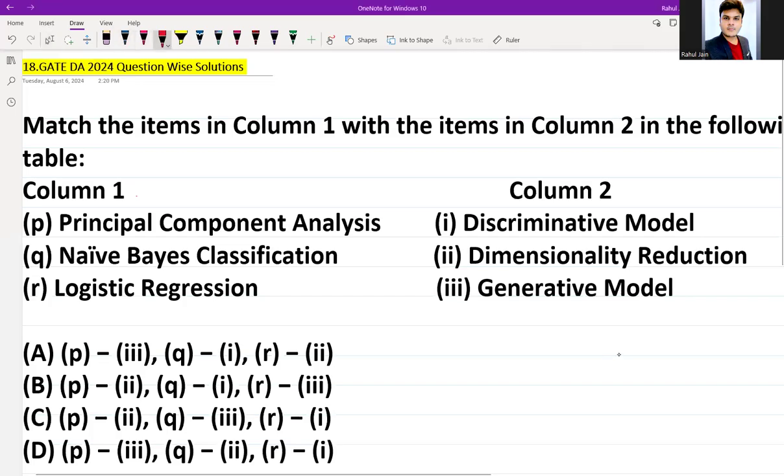Hello everyone, I hope you all are doing very well. Here is question number 18 which was asked in GATE Data Science and Artificial Intelligence exam 2024. The question level is very easy, only basic concepts have been asked. Two columns have been given, Column 1 and Column 2, and we need to match them.